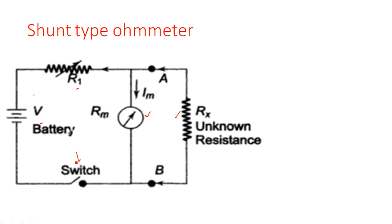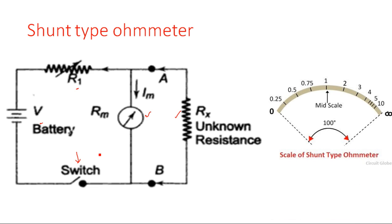The unknown resistance is connected in parallel with the meter between points A and B. Now let us see the dial of this shunt type ohmmeter. If you observe this dial, it has zero ohms on the left side and infinity ohms on the right side, which is quite the opposite of the series type ohmmeter. In the series type ohmmeter, zero ohms is on the right side and infinity ohms is on the left side.